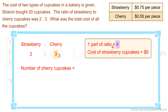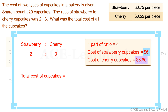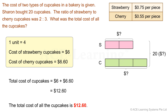The number of cherry cupcakes is 4 times 3, which is 12. The cost of the cherry cupcakes is 12 times 55 cents, which is 6 dollars and 60 cents. So the total cost of all the cupcakes is 6 dollars plus 6 dollars and 60 cents, which is 12 dollars and 60 cents. The total cost we found is confirmed correct. The total cost of all the cupcakes is 12 dollars and 60 cents.